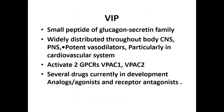The third vasodilator is VIP (vasoactive intestinal peptide), a small peptide from the glucagon secretion family. It is widely distributed throughout the CNS and PNS and is a potent vasodilator, particularly in the autonomic vasodilator system. It activates G protein-coupled receptors and is available as VIP1 and VIP2 subtypes. Several drugs including analogs, agonists, and receptor antagonists are currently under development.